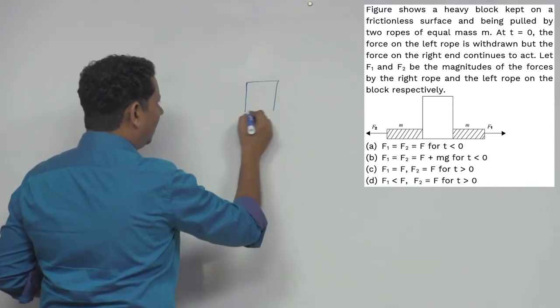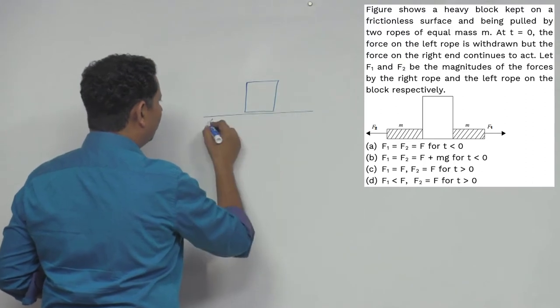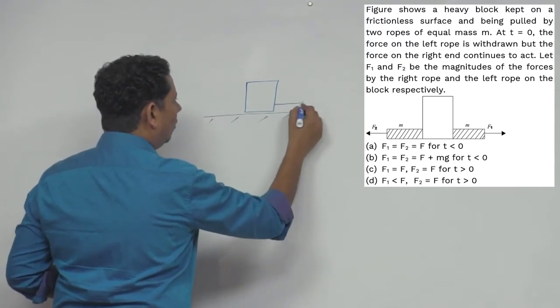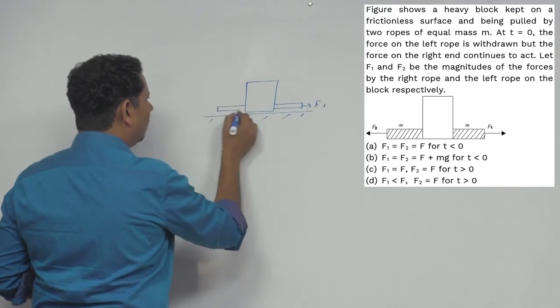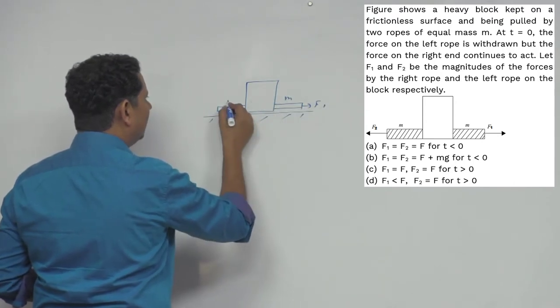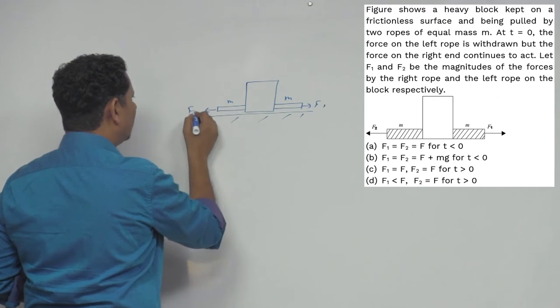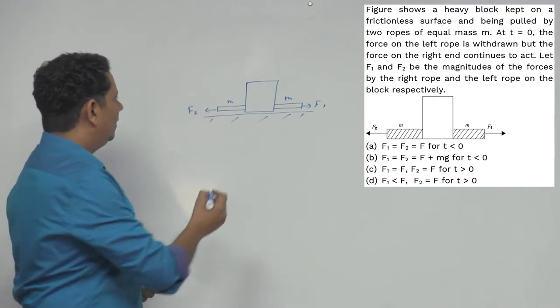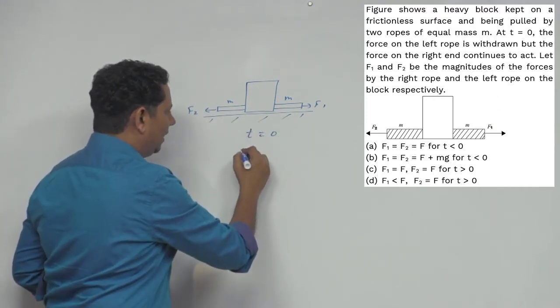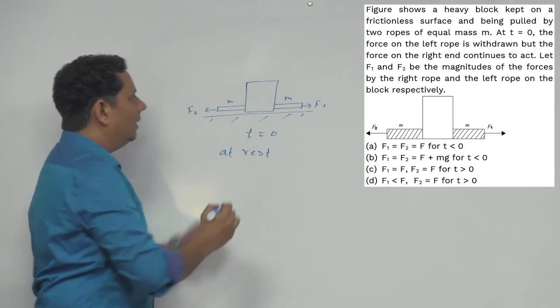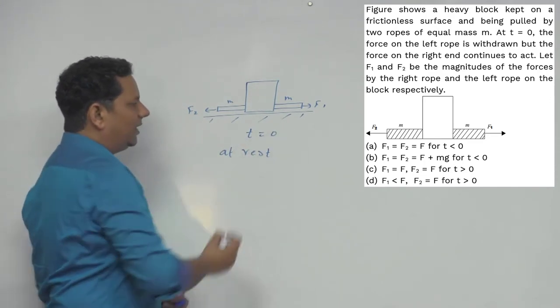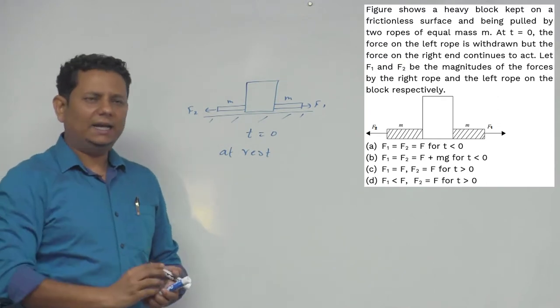So here you have a heavy block kept on a frictionless surface. Two forces are acting - one here we call F1 from this rope with mass m, and here another force F2 from this rope with mass m. Now at t equal to 0, our assumption is that the block is at rest. If we're talking about at t equal to 0, the block is at rest.